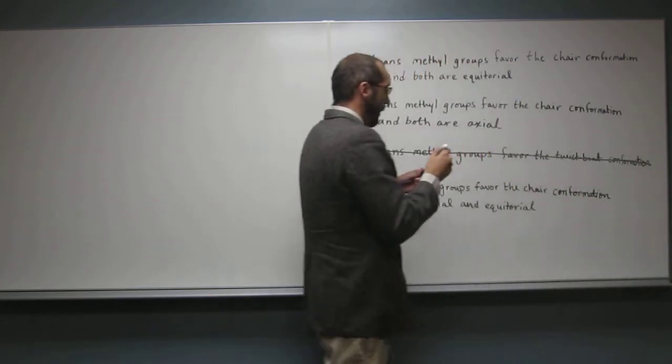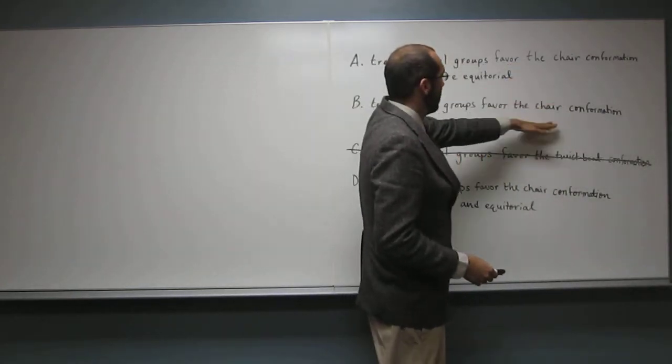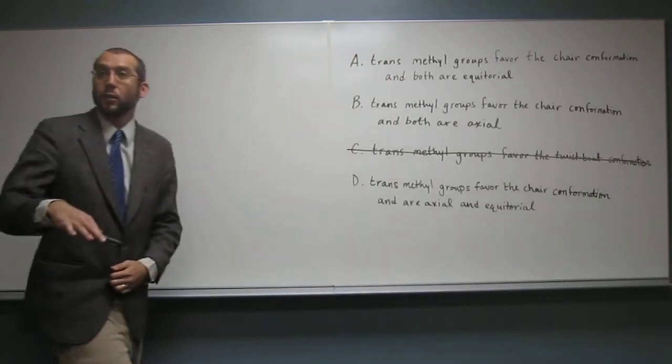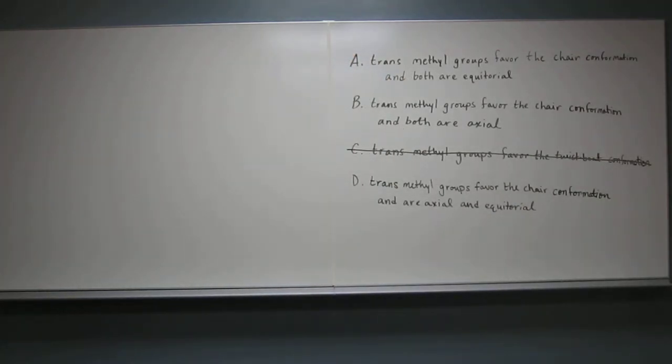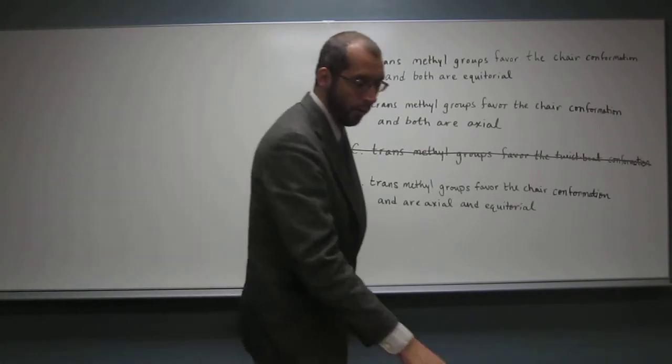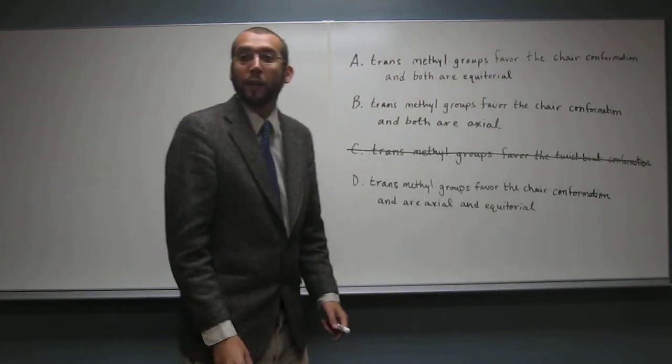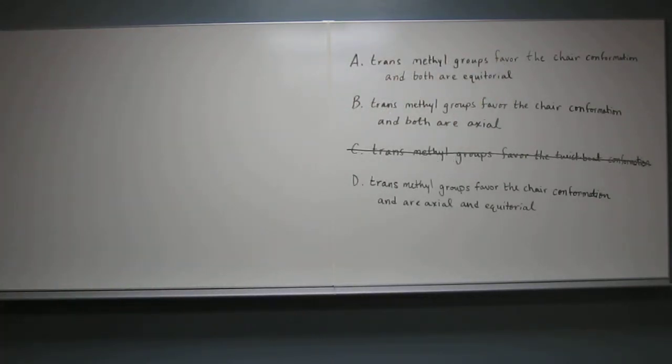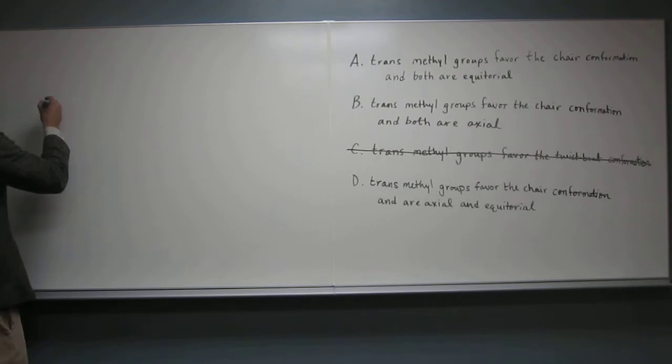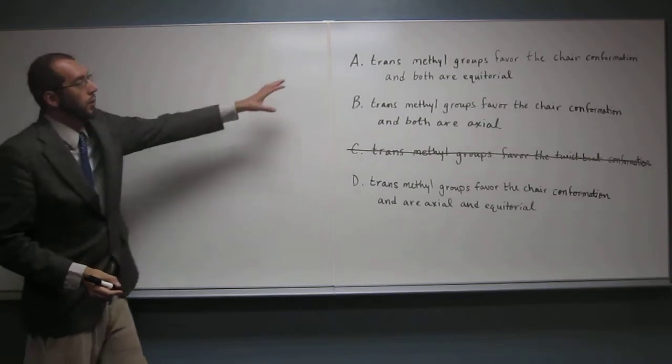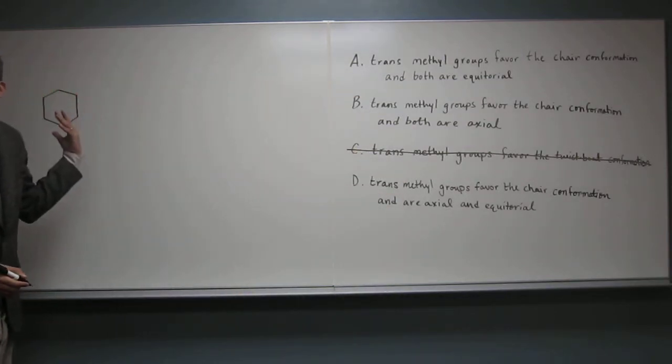Okay, so if we look at the other three, it says the chair conformation. That's the lowest energy conformation. So we need to figure out which chair conformation this 1,4-trans-dimethylcyclohexane is going to be. So let's go ahead and just draw the structure of 1,4-trans-dimethylcyclohexane. So I'm going to draw it as a bond line structure.